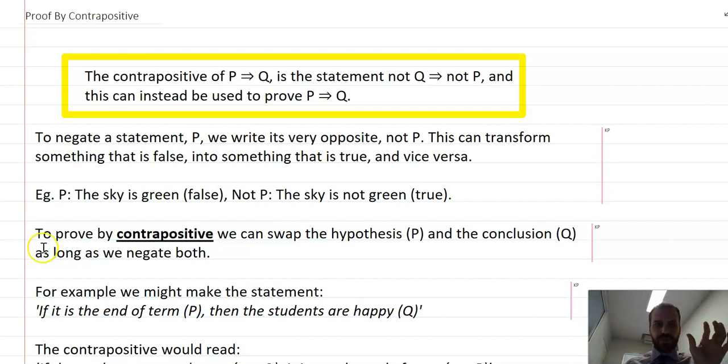This video is on proof by contrapositive. A contrapositive, easy to understand here: if we're trying to prove that P implies Q, sometimes it's easier to imply the same thing, which is not Q implies not P. That's the contrapositive, and if we prove that, we are also proving the original statement.